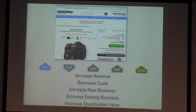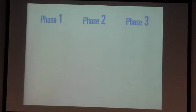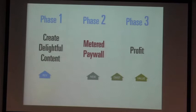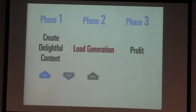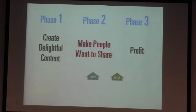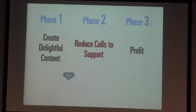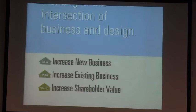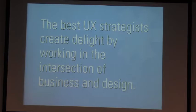Going back to the underpants gnomes, we can see how this works. We create delightful content. In the end, we have profit. What happens in the middle? Except now we can talk about it — how a metered paywall works, how a lead generation system might work, how promoting content's value pays off, how investing in the user's flow pays off, how we make people want to share the content we produce, how we reduce calls to support. All of those things are within the capability of design. All of those things affect the bottom line. The best UX strategists create delight by working in the intersection of business and design.